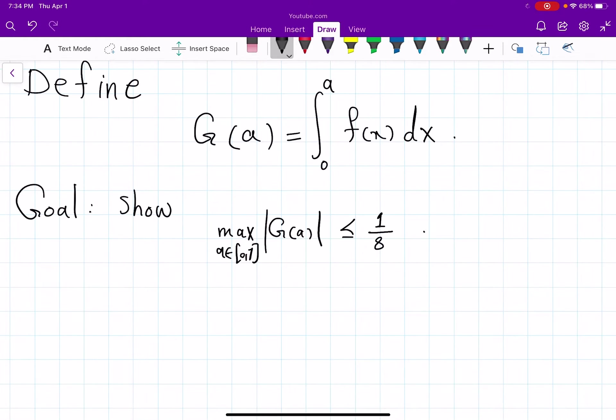But why is this true? Suppose g(c) is maximum |g(a)| for a from 0 to 1. So g is a continuous function, actually continuously differentiable function on 0 to 1. So it definitely reaches a maximum on this interval.